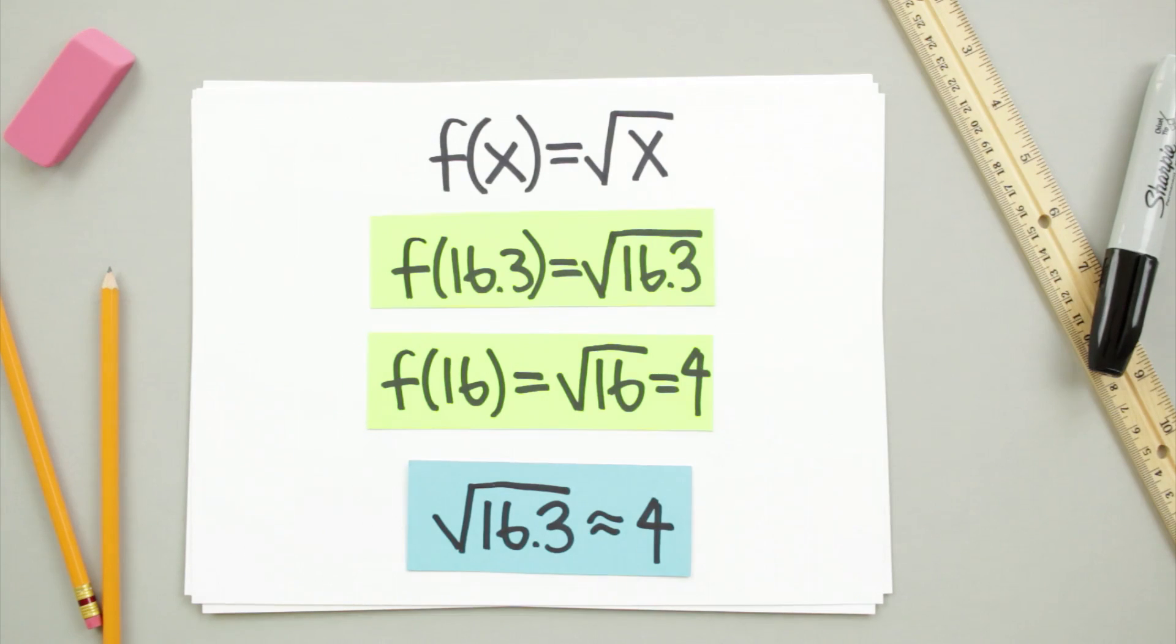Let's try using linear approximation to get an even better idea of what this square root might be. We'll use the information that we do know, that the square root of 16 is 4, in order to estimate what we don't know.